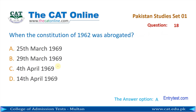Question number 18: When was the constitution of 1962 abrogated? 1962 کا آئین کب منسوخ کیا گیا? The correct answer is A — 25th March 1969.